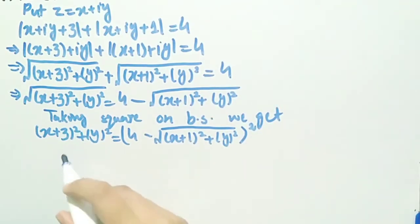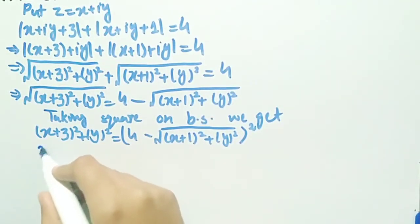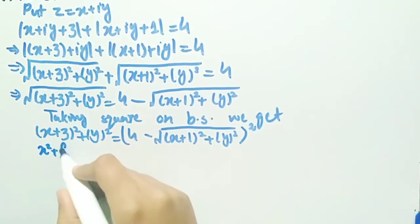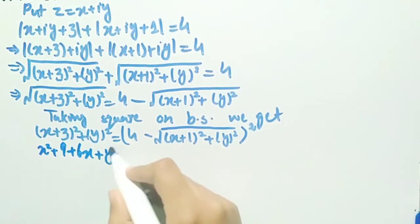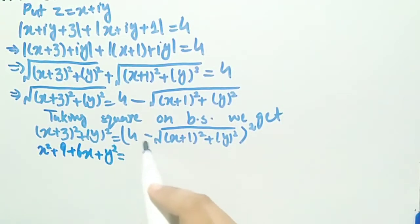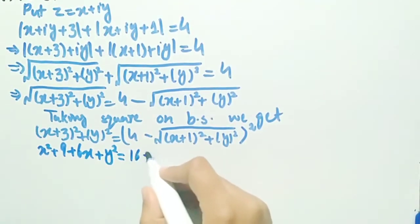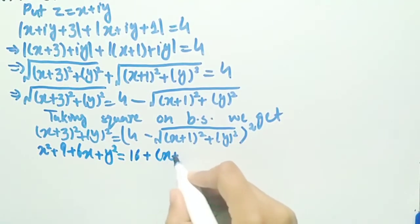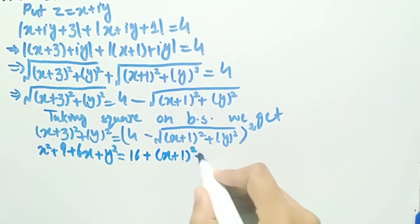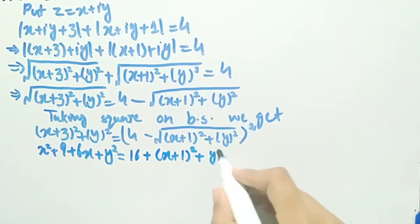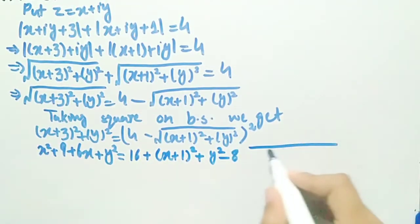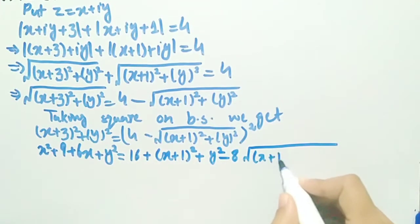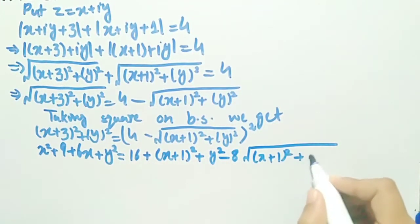Expanding: (x plus 3) whole square equals x square plus 9 plus 6x, and y square remains y square. The right-hand side expands to 16 plus (x plus 1) whole square plus y square minus 8 times square root of (x plus 1) whole square plus y square.